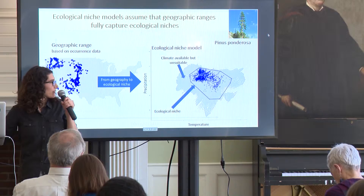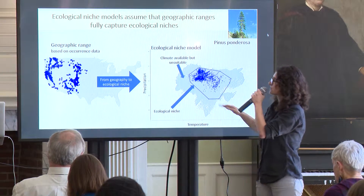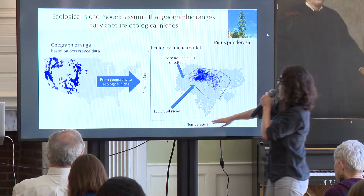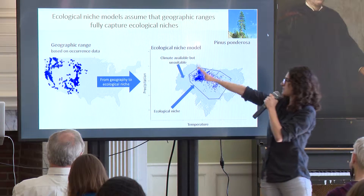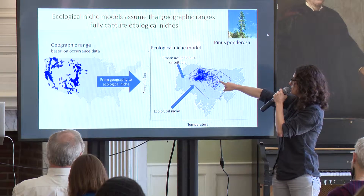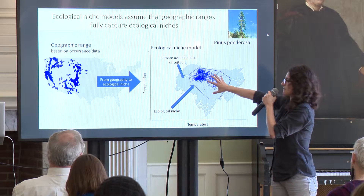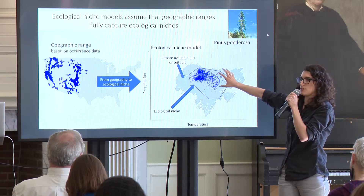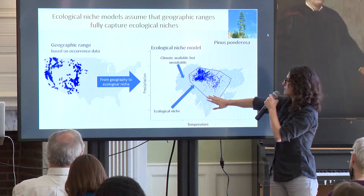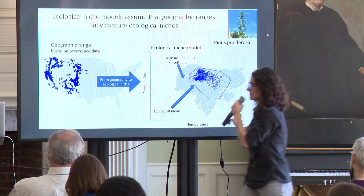What does that look like with real data? Here is Pinus ponderosa — this is their geographic range based on observation data. If you plot that into a temperature-precipitation axis, here in blue you have all the grid cells where the species is found. If you draw a polygon around it, everything inside the polygon would be the species' ecological niche, and everything outside would be climate that's available but unsuitable for the species.